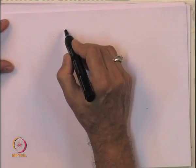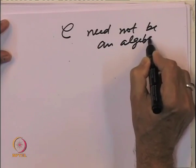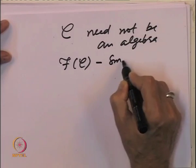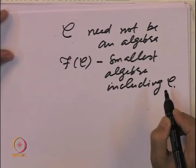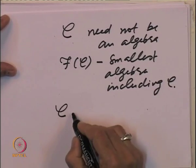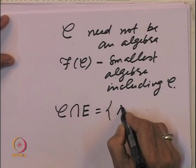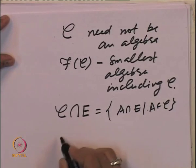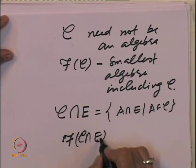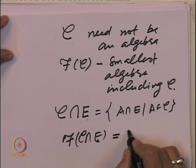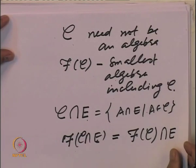We proved that a class C need not be an algebra, but you can generate an algebra out of it — the smallest algebra including the given collection C. We also showed that if you take a collection C and restrict its elements to a set E, forming C ∩ E, then the algebra generated by C ∩ E, which is the algebra of subsets of E generated by C ∩ E, equals the algebra generated by C restricted to E.